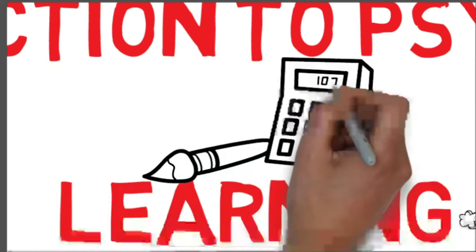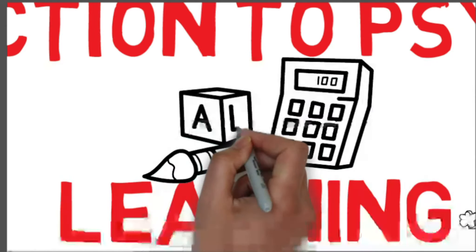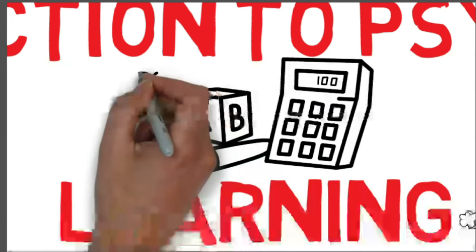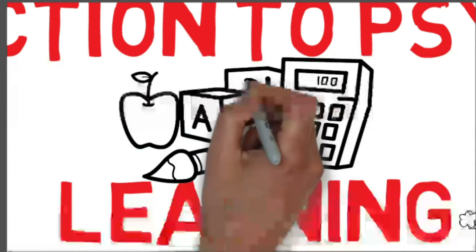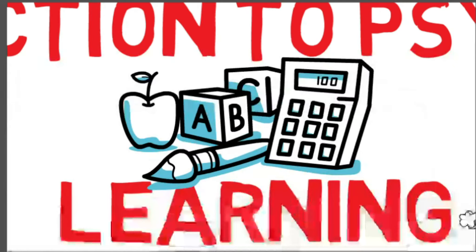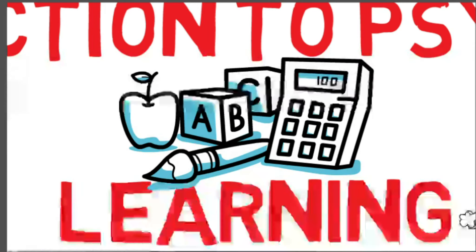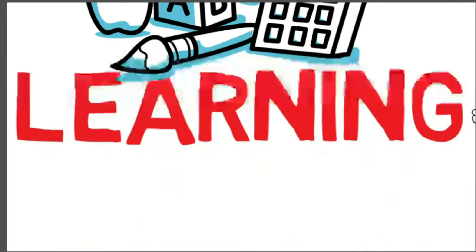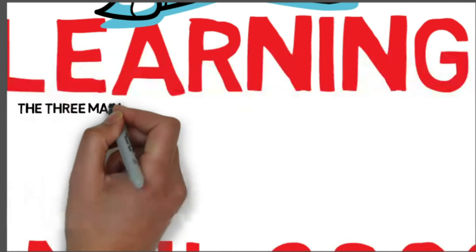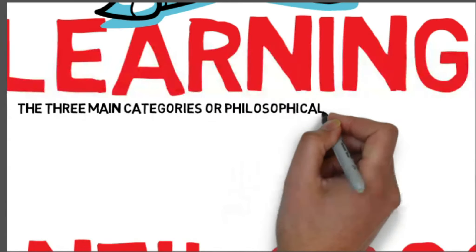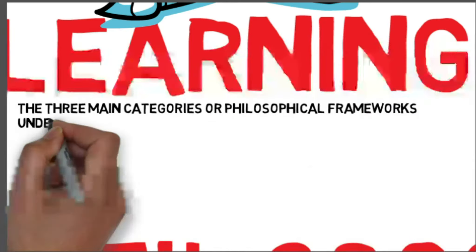Learning theories have two chief values. One is in providing us with vocabulary and a conceptual framework for interpreting the examples of learning that we observe. Remember that Introduction to Psychology is really a lot about learning the vocabulary, because the vocabulary provides us with the foundation for learning. The second chief value is in suggesting where to look for solutions to practical problems.